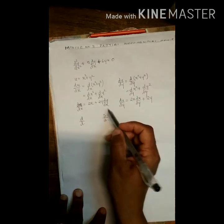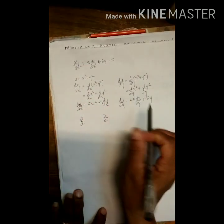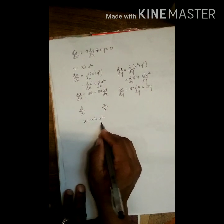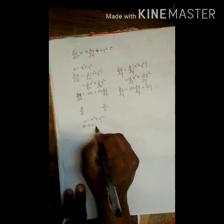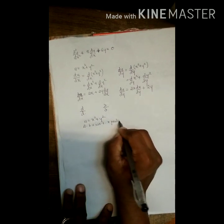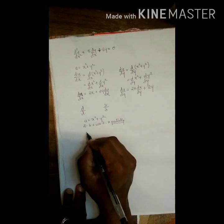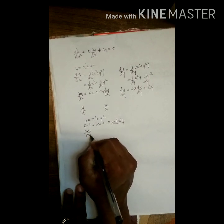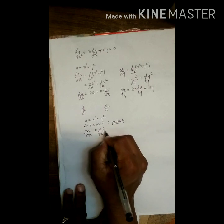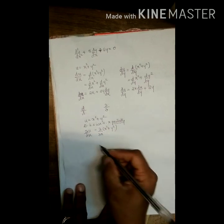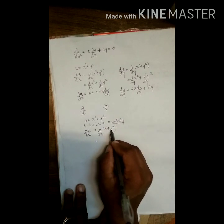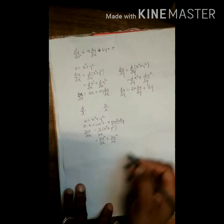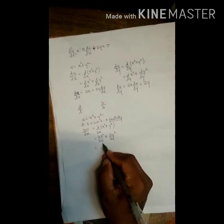When I take differentiation with respect to x and y but talk about it as partially — given u = x² + y², differentiating both sides with respect to x partially. When I say partially, you have to take ∂ on both sides. So ∂u/∂x = ∂/∂x of (x² + y²). The plus sign means we differentiate separately: ∂(x²)/∂x + ∂(y²)/∂x.